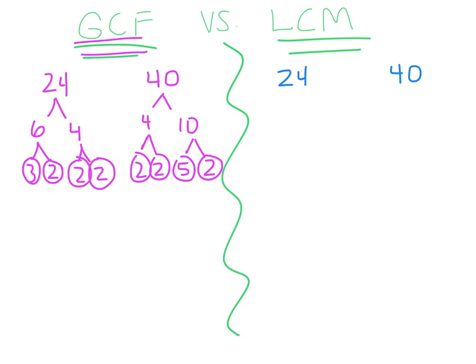Okay, as you can see, I took 24 and I started off with 6 times 4. Then I went down the tree and I said 3 times 2 is 6, and then 2 times 2 is 4. Same thing over here. I started with 4 times 10. I get left with 2 times 2 times 5 times 2.